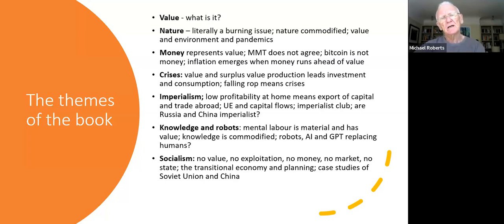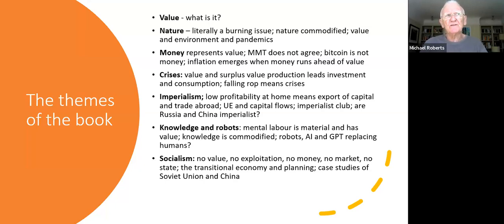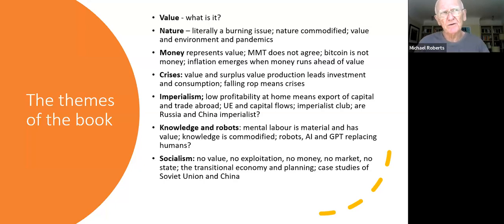In the third chapter we look at crises, going over the theory of crises from the point of view of the Marxist law of value — looking at value and surplus value production, how that leads through profitability and changes in profitability into regular and recurring crises. In the fourth chapter we develop that internationally to look at the question of imperialism, a subject that throughout most of the 20th century seemed to lose interest, but in the 21st century has become a big issue: the huge flows of value through transfer of value through trade.